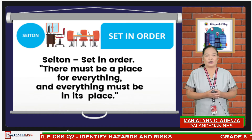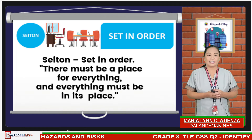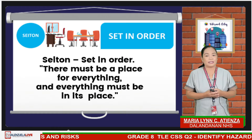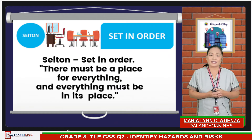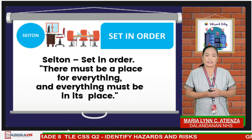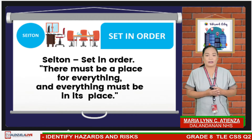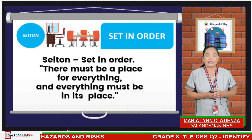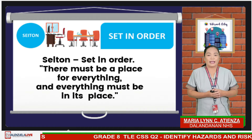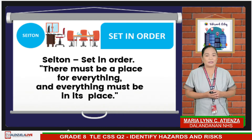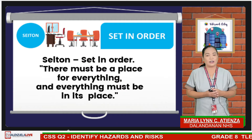Next is Seiton, or orderliness. It's also about efficiency. This step consists of putting everything in an assigned place so that it can be accessed or retrieved quickly, and returned to that same place quickly. If everyone has quick access to an item or material, workflow becomes efficient and the worker becomes productive. The correct place, position, or holder for every tool, item, or material must be chosen carefully in relation to how the work will be performed. Every single item must be allocated its own place for safekeeping, and each location must be labeled for easy identification.